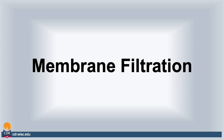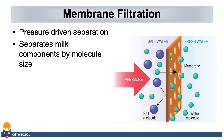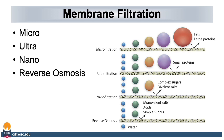The next topic we will cover is membrane filtration. Membrane filtration is pressure-driven separation. We can separate milk components by molecule size. This is done by putting high pressure on a solution and forcing smaller molecules through the membrane pores. In the dairy industry, there are four very common membrane filtration methods: microfiltration, ultrafiltration, nanofiltration, and reverse osmosis.